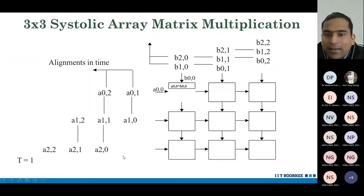Now, here, at time t equals to 1, a00 enters systolic array, b00 enters the systolic array. They get multiplied. All other PEs are idle. They are not doing anything. In this cycle, only one operation has happened.